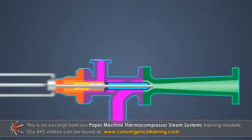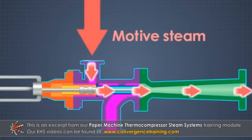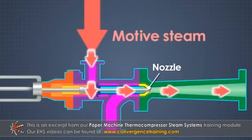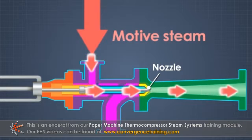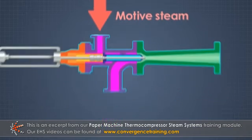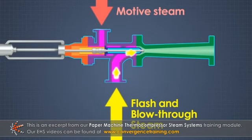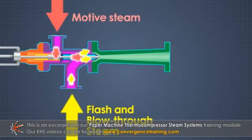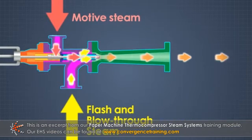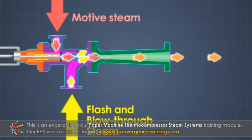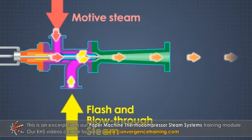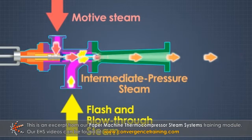In a thermocompressor, the high-pressure motive steam passes through the nozzle, which significantly increases its velocity and lowers the pressure at that point in the device. Steam from the condensate separator tank is pulled into this low-pressure area. As the combined steam moves through the diffuser, the velocity decreases and the two steams come to thermodynamic equilibrium, and an intermediate pressure steam emerges.